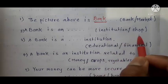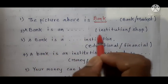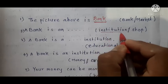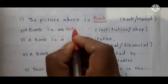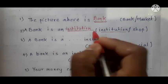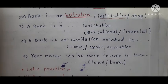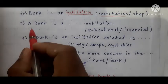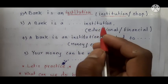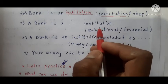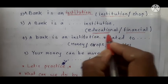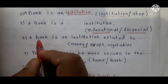Second question: a bank is an — institution or shop? Bank is an institution. Educational or financial? Educational means that; financial means this. Bank? Yes — financial.